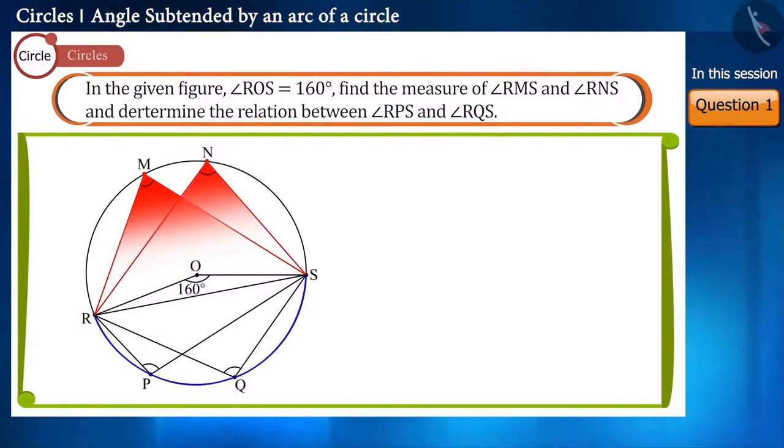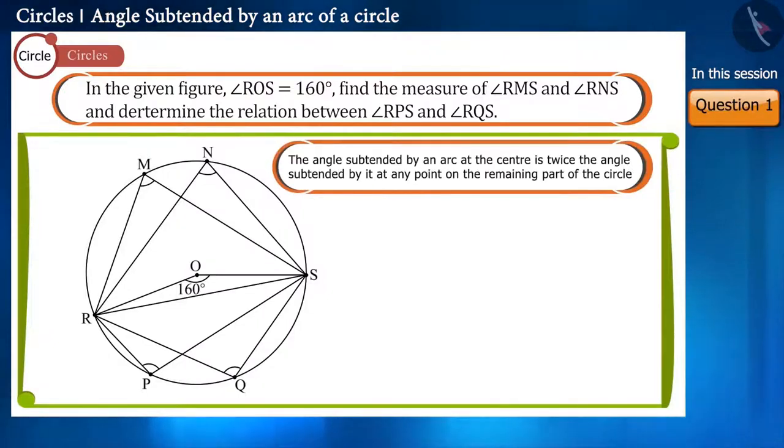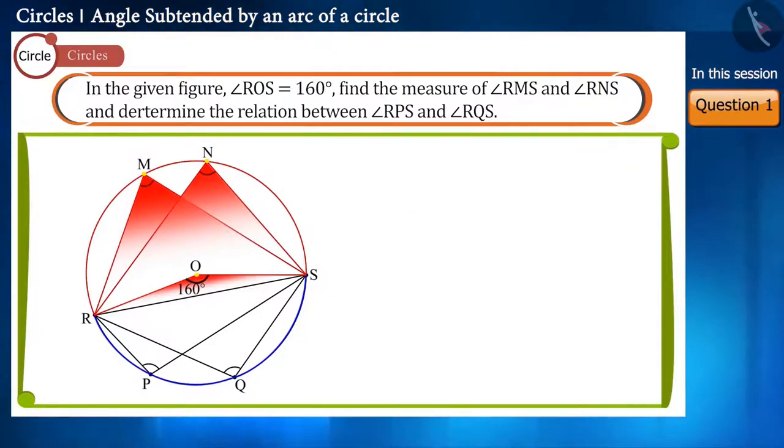Here we can use the theorem that the angle subtended by an arc at the center is twice the angle subtended at any point on the remainder of the circle. That is, angle ROS will be equal to twice angle RMS and twice angle RNS.